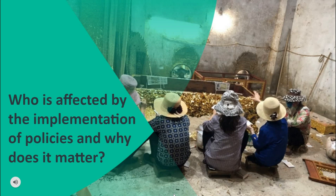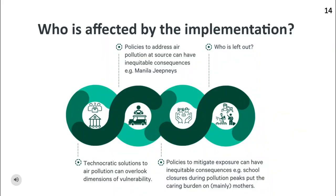This section will zoom into those who are affected by the implementation of policies and those who are left behind. It will also discuss why an inclusive and equitable approach to formulating and implementing policies is necessary. Measures to address air pollution incur costs, such as to install appropriate equipment. However, the costs of inaction may end up higher in terms of impacts on the labor force and productivity.